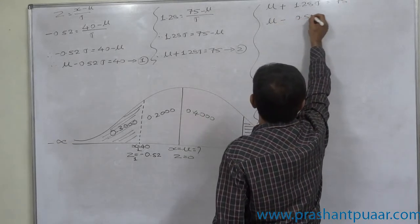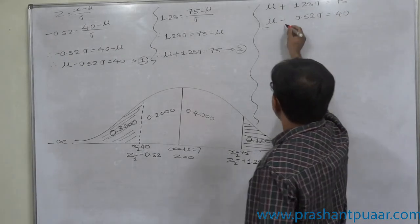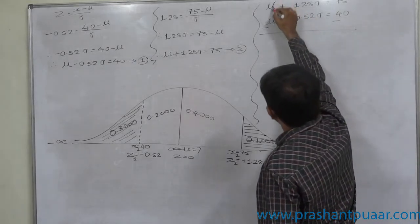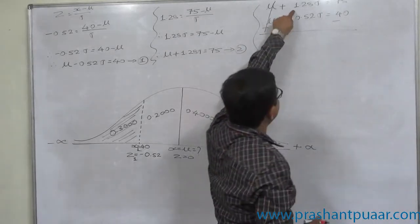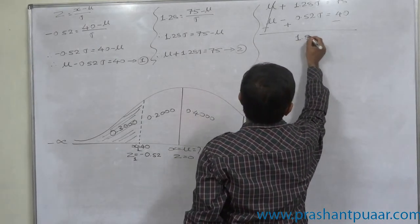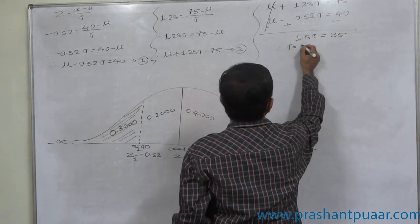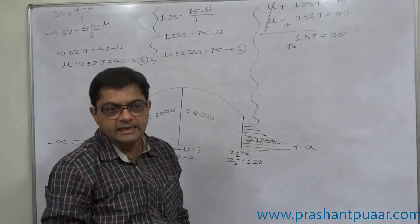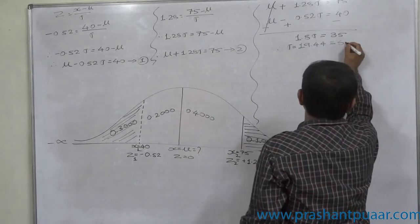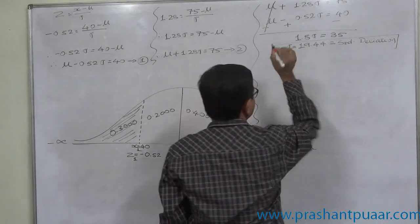Equation two: mu plus 1.28 sigma equals 75. Equation one: mu minus 0.52 sigma equals 40. Subtracting equation one from equation two: mu terms cancel, and we get 1.28 plus 0.52 sigma, which is 1.8 sigma equals 35. Therefore sigma equals 35 divided by 1.8, which comes to 19.44. This is the standard deviation.